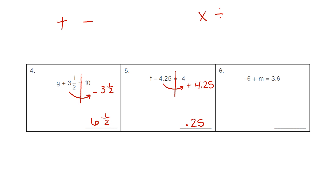For number 6, the negative 6 is on the left and the 3.6 is on the right. We take the number away from the variable and pull it towards the other number. The negative 6 — we do the opposite, we do a positive 6. On the calculator, 3.6 plus 6 gives us an answer of 9.6.